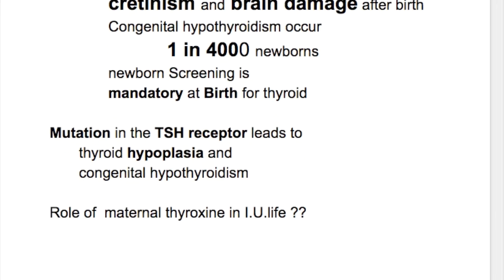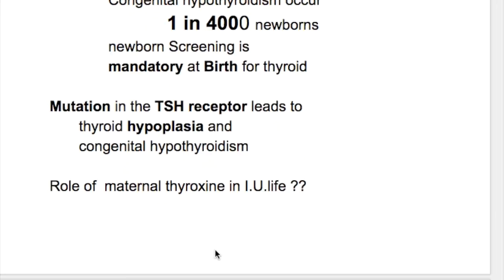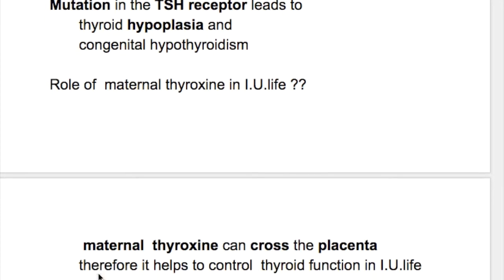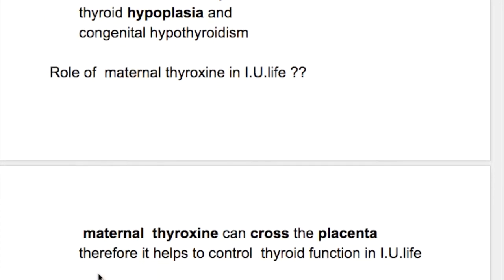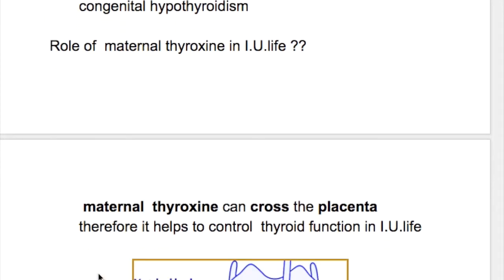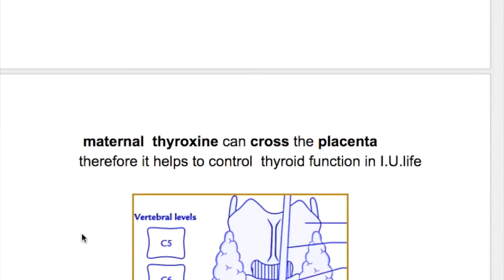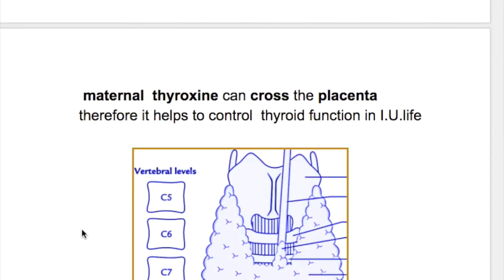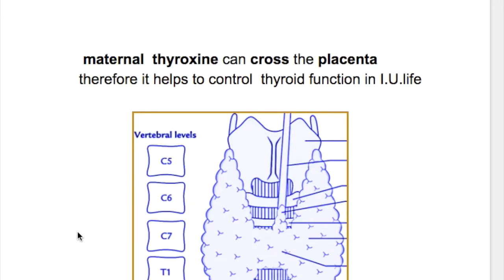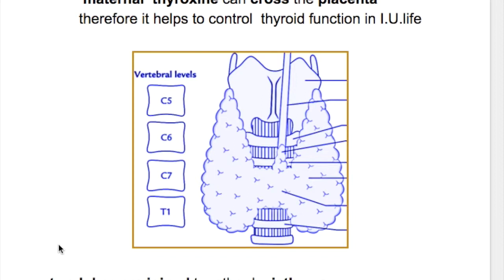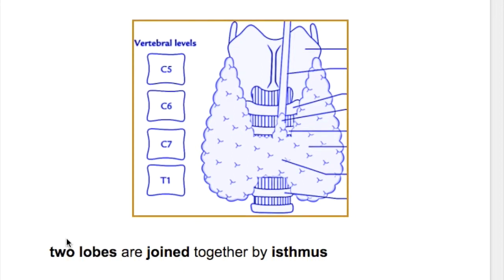What's the role of maternal thyroxin in intrauterine life? Maternal thyroxin can cross the placenta, therefore it helps to control thyroid function in intrauterine life. So there is normal development of the thyroid gland during intrauterine life even if the thyroid is hypoplastic.